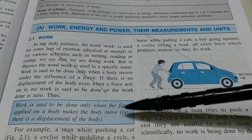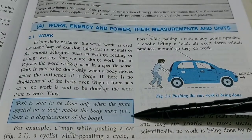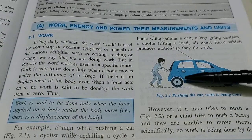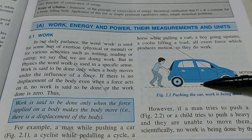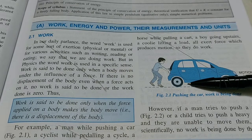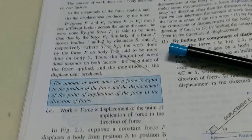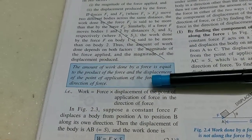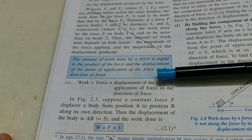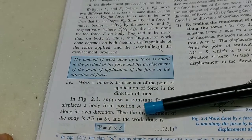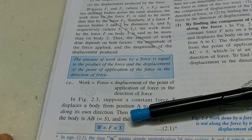In physics, work is said to be done only when the force applied on a body makes the body move. If there is no movement, no matter how much effort you are applying, you are not doing any work. The formula is: W = F × S (force into displacement in the direction of the force). Note that though force and displacement are vector quantities, work is a scalar quantity.